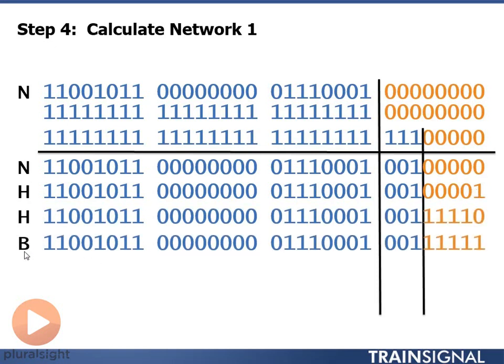Then I'm going to calculate my broadcast address. In my broadcast address, I put all ones in the host portion, keeping my network portion exactly the same as the network portion of my network address. And then to calculate my last host, I just subtract one from this broadcast address, which is 11110 in the host portion.